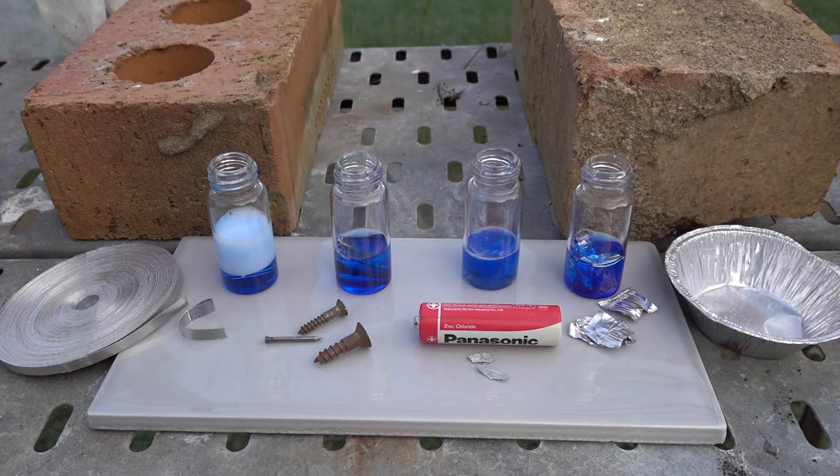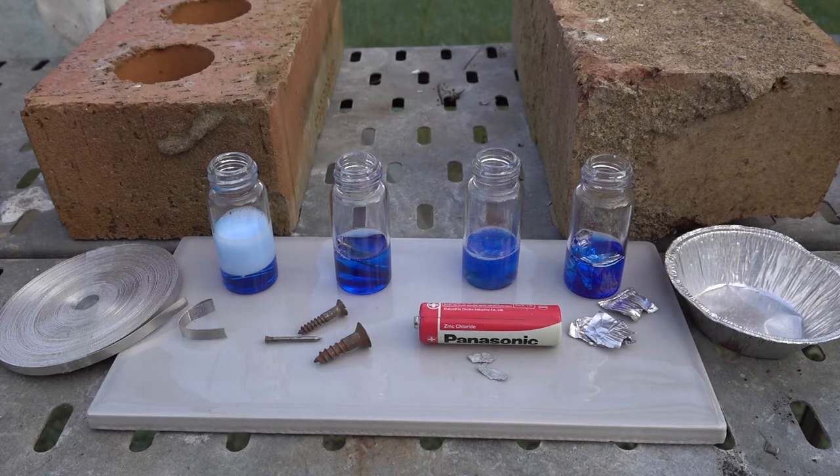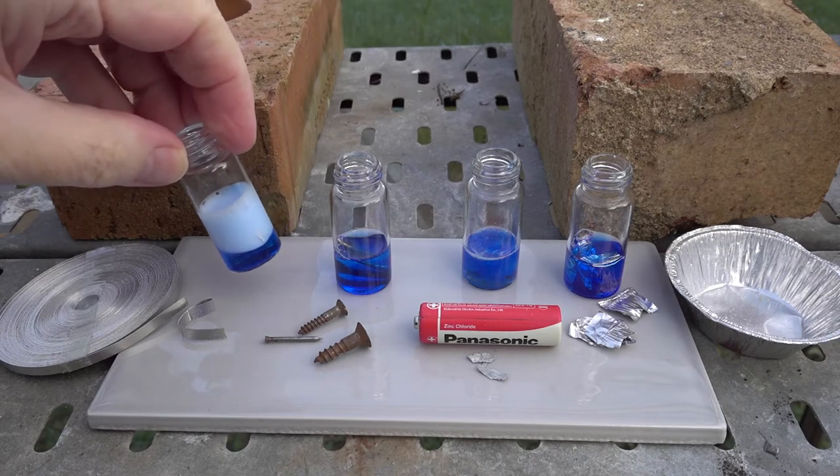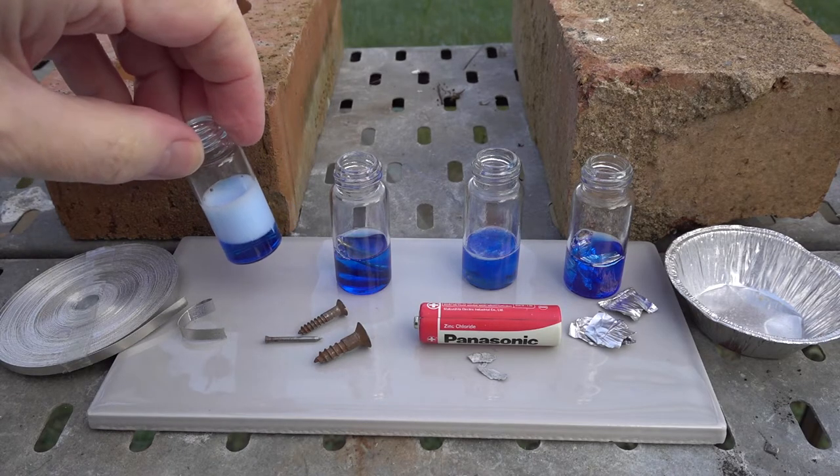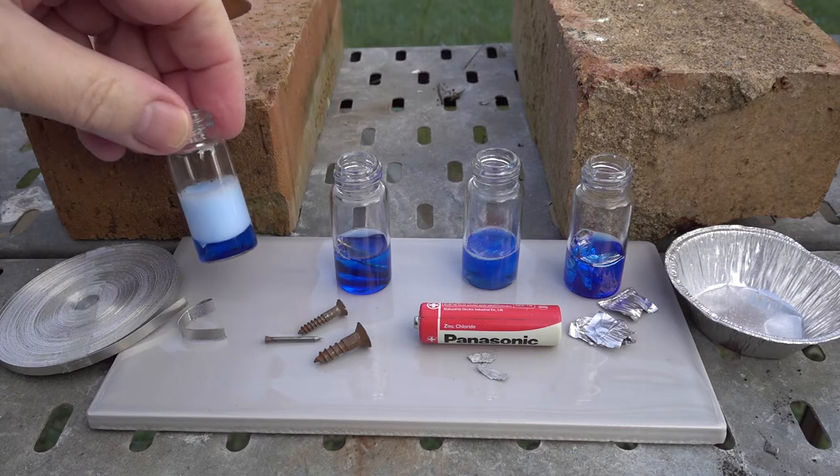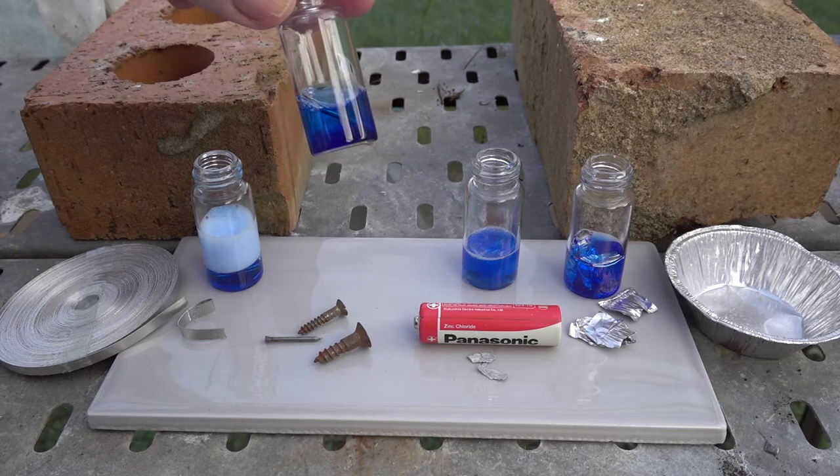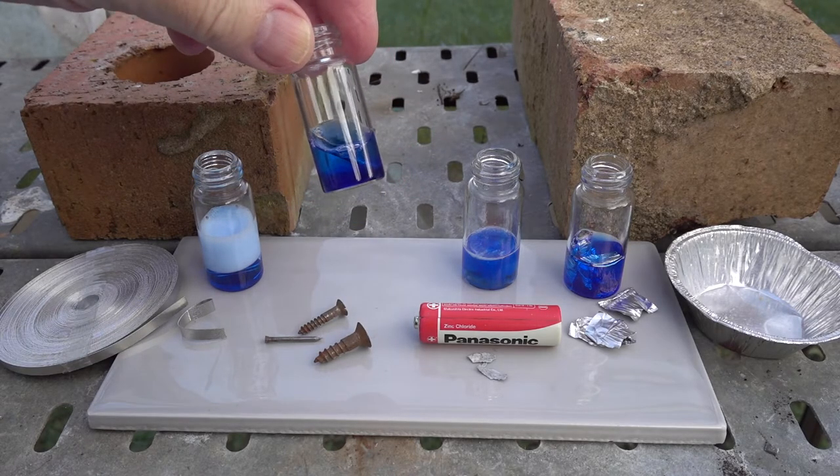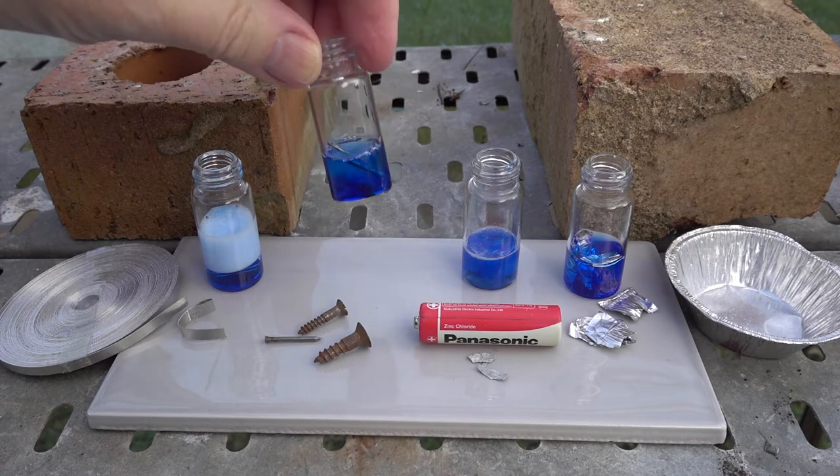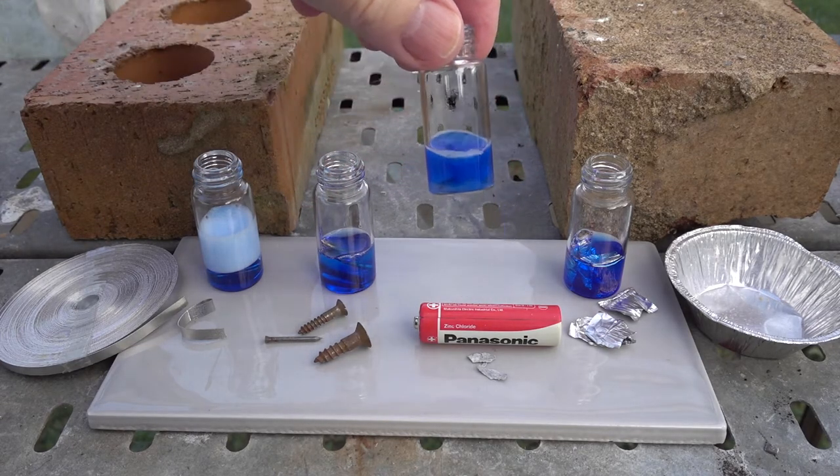So here are our four reactions after about 15 minutes. From left to right you can see that the magnesium has been reacting quite quickly even at the temperatures in the greenhouse of less than five degrees centigrade. Next to the magnesium we've got the iron steel screw and panel pins. Those aren't really reacting very quickly. The bubbles there are what we saw from mixing at the start.